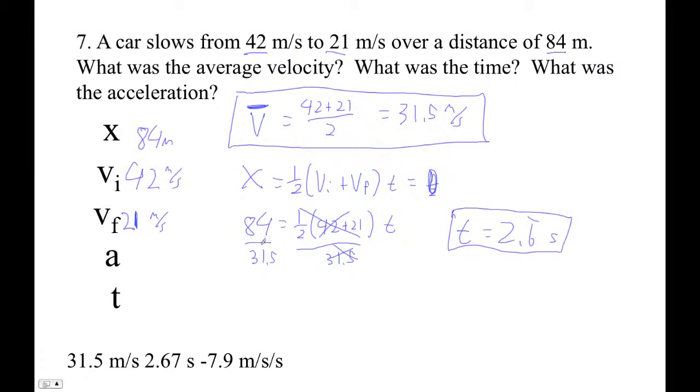What was the acceleration? I'm going to use, you know what I'm going to do is, I'm not going to use the time that we just got. I'm going to be contrary, I'm going to use this guy: vf squared equals vi squared plus 2ax. Because I want to use no t, this guy is no t. I don't want to use that, so I can use these guys.